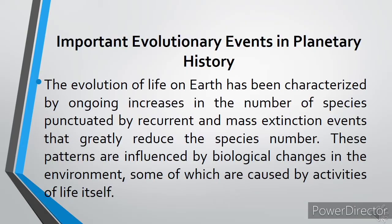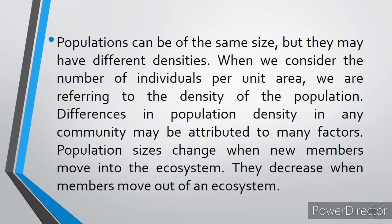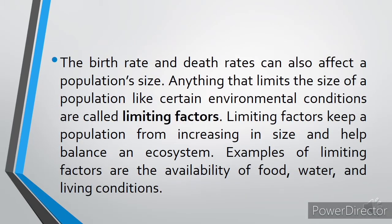Key concepts: Population pertains to the number of organisms of the same species living in a certain place. Biodiversity refers to the variety of life in an area. Communities with many different species will be able to withstand environmental changes better than communities with only a few species. Populations can be of the same size but may have different densities. When we consider the number of individuals per unit area, we are referring to the density of the population. Differences in population density in any community may be attributed to many factors. Anything that limits the size of a population, like certain environmental conditions, is called a limiting factor. Limiting factors keep a population from increasing in size and help balance an ecosystem.